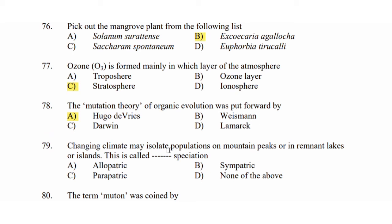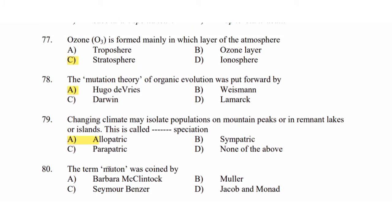Question 79: Changing climate may isolate populations on mountain peaks or in remnant lakes or islands — this is called dash speciation. Option A: allopatric. Option B: sympatric. Option C: parapatric. Option D: none of the above. The answer is allopatric speciation. Related question: the term was coined by Option C: Samuel Benzer, Option B: Jacob and Monod.